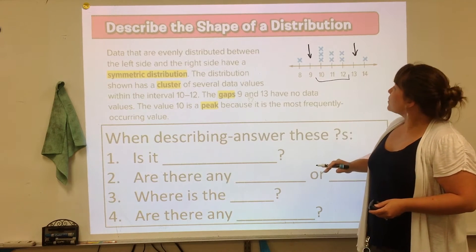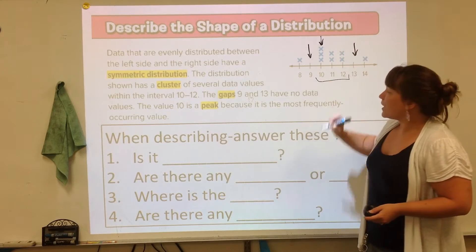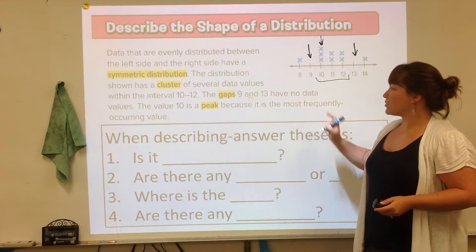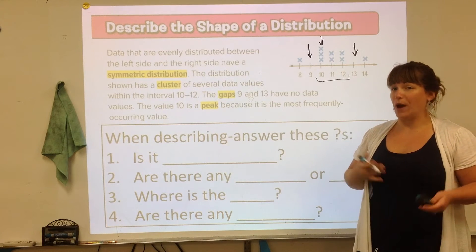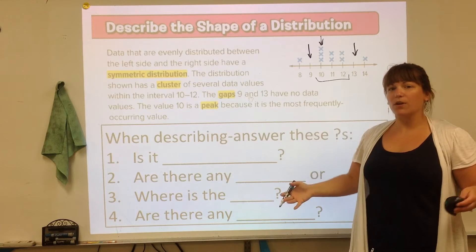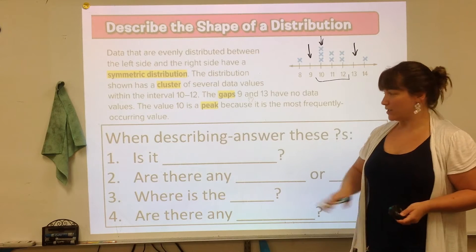The other thing you can talk about is the peak. So the highest is at 10, so the sentence the value 10 is a peak because it's the most frequently occurring value is another way to describe distribution. And that's what we're going to be doing. We're going to be looking at the shape of our graphs and talking about them, describing them with sentences.